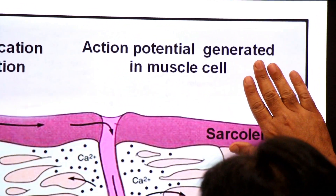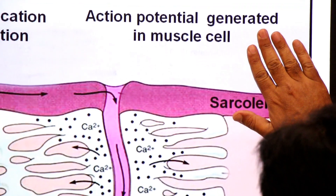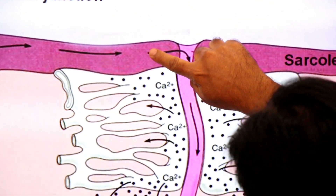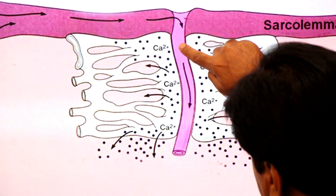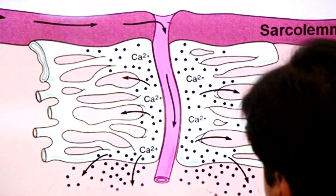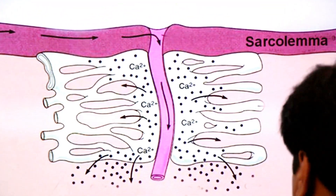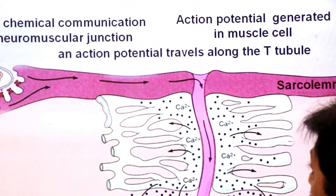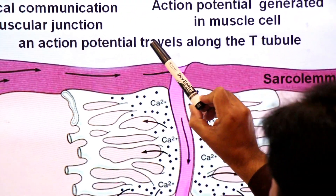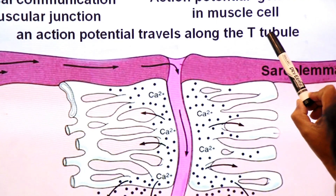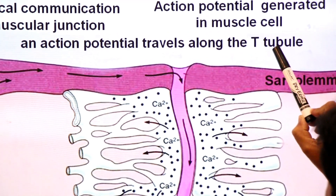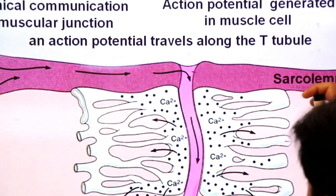An action potential — an electrical signal — is generated in the muscle cell. This electrical signal is conducted through a tubule called the T-tubule. The action potential travels along the T-tubule; T-tubule stands for transverse tubule.